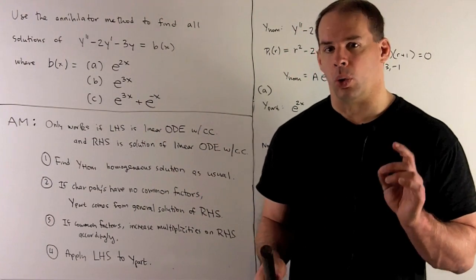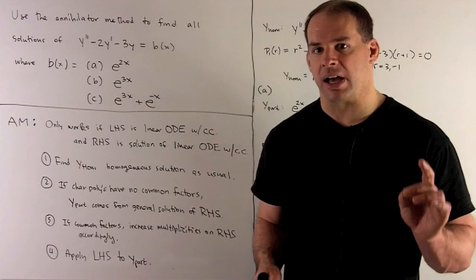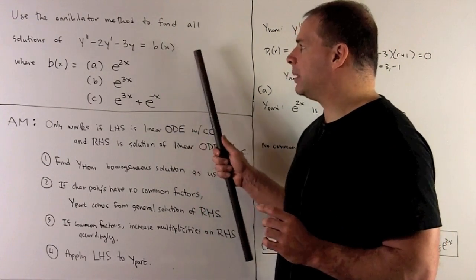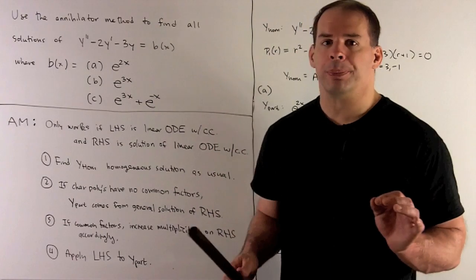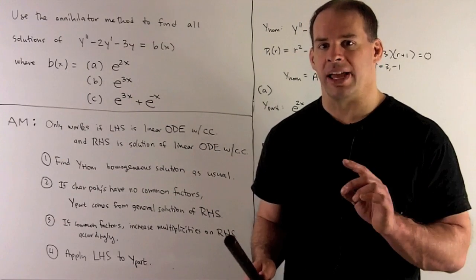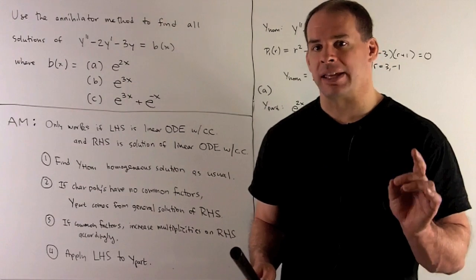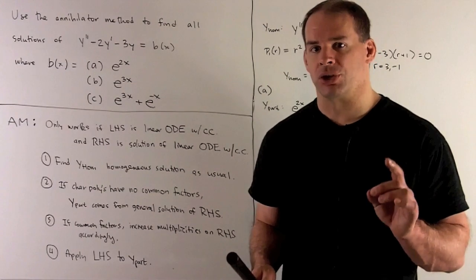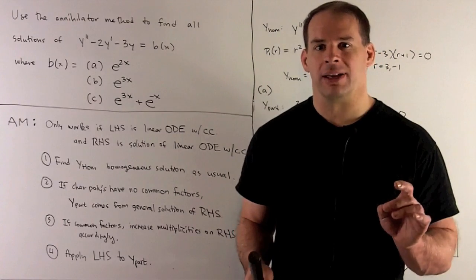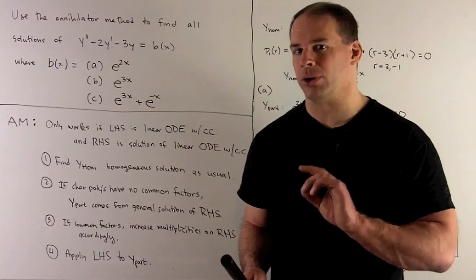Normally, we'd solve this equation using variation of constants — let b(x) equal zero, get the general solution of the homogeneous equation, mix it with b(x), integrate, and that gets us to our particular solution. If we can use the annihilator method, we can go straight to our particular solution with no integration.